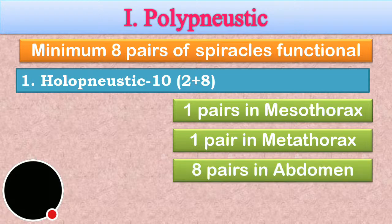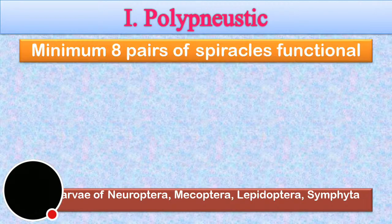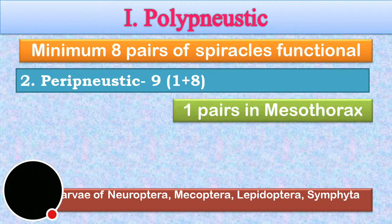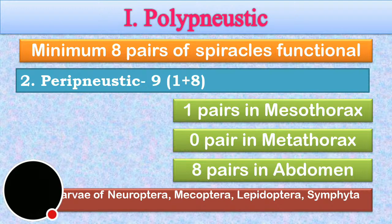In polynoistic, nine pairs are functional: one from mesothorax and eight pairs in abdomen, so one plus eight equals nine functional spiracular pairs.